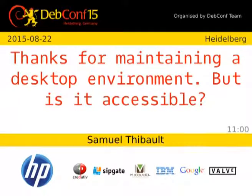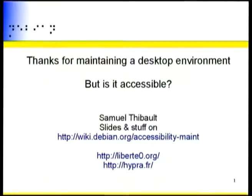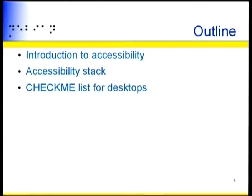Good morning. I will talk about accessibility today. We have a lot of desktops in Debian and we would like to talk about accessibility of these desktops. All the slides and various stuff are on the wiki at debian.org in the accessibility-mint wiki page, so you can get stuff from there. I will introduce accessibility, explain how the accessibility stack works, how you will interact with your desktop, and provide a list of things you could check by yourself to make the accessibility team's life easier.